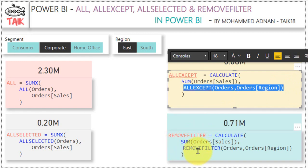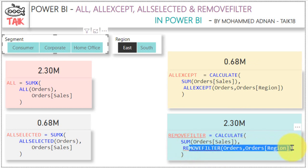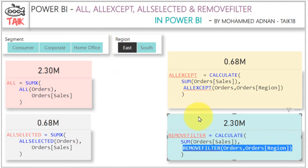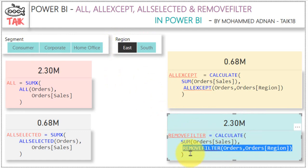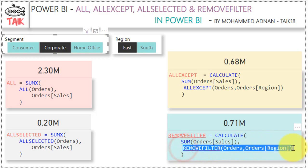Coming to REMOVEFILTERS — it removes the filters applied on the specific column, which is the Region column here. I have filtered East in Region, but the value has not changed here compared to ALL. Because I used REMOVEFILTERS on the Region column, whatever filter is applied to Region is not considered and it takes all values from Region. That is why no change has been made. If I make a filtration on Segment, it will filter the value, because Segment is not mentioned in the REMOVEFILTERS — it only removes the filter on the Region column.